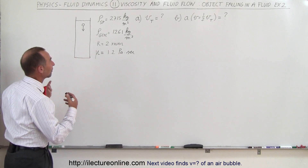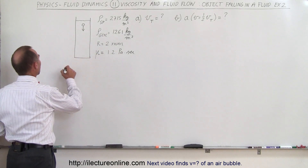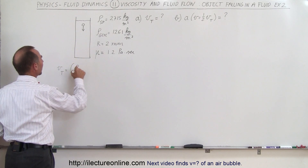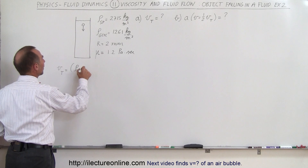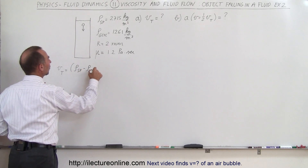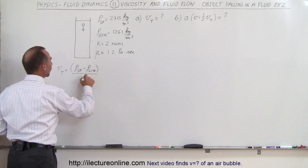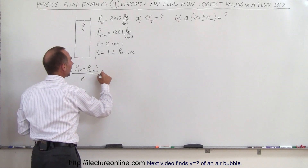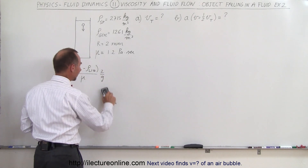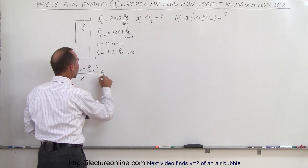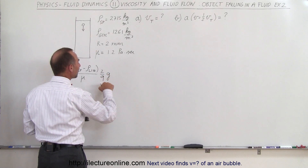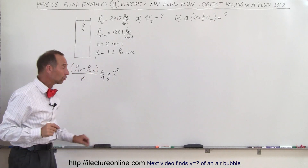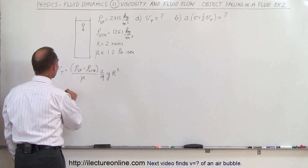First we're going to find the terminal velocity. The terminal velocity is equal to the difference between the densities — the density of the sphere minus the density of the liquid — divided by the coefficient of viscosity, times two-ninths times the acceleration due to gravity times the radius of the sphere squared. That's how we find the terminal velocity.